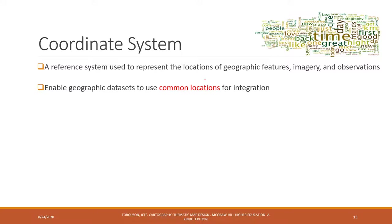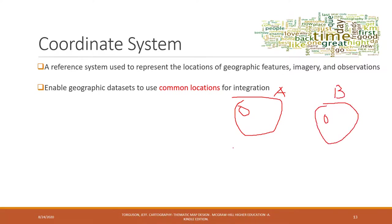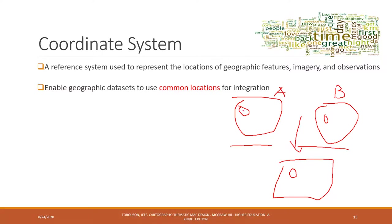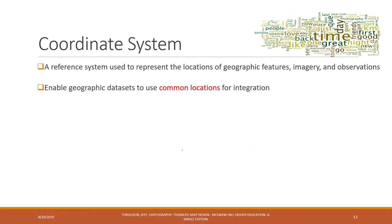The coordinate system enables us to match data from different datasets. For example, if we have dataset A representing JMU in Harrisonburg and dataset B also representing JMU in Harrisonburg, once both datasets have a coordinate system and we import them into GIS, we can match those two datasets together. We know that JMU in dataset one will match exactly the same location as JMU in dataset two — they can align with each other for data integration.